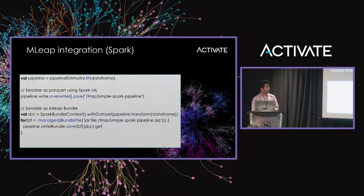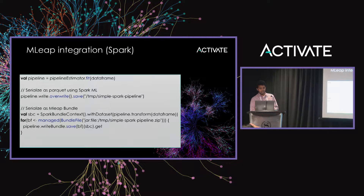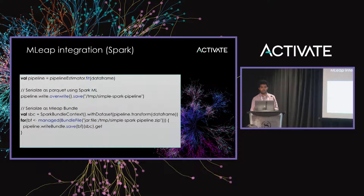Here's a quick code example. You have a pipeline estimator — a Spark pipeline. You fit your model, and once fitted, you can either save it in parquet format using Spark ML, or use MLEAP for serialization. The difference is: if you use Spark ML, the model is saved as parquet and you would need to create a DataFrame at serving time, which has quite a bit of overhead. Whereas if you save it as an MLEAP bundle, you get faster predictions — and you haven't changed how you're training. You're still using all the components of your own library, in this case Spark ML, but at the end you're exporting it as an MLEAP serialization format.